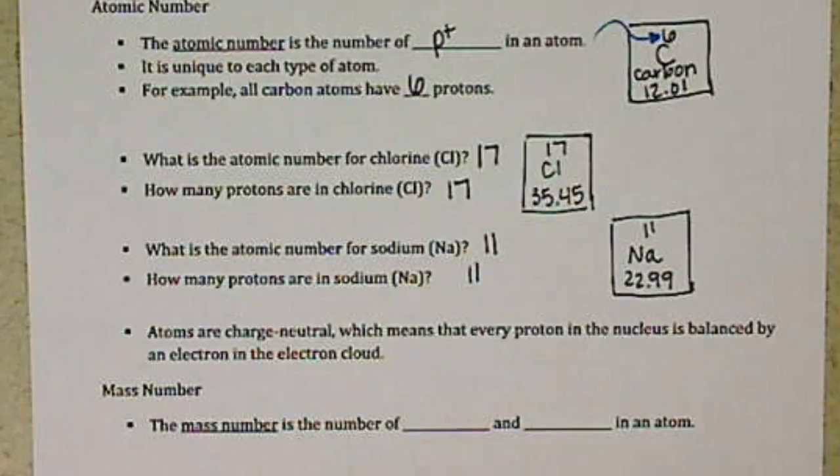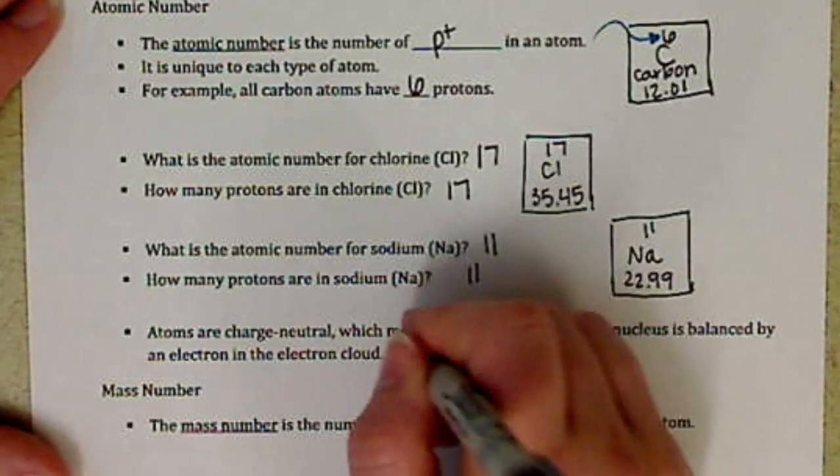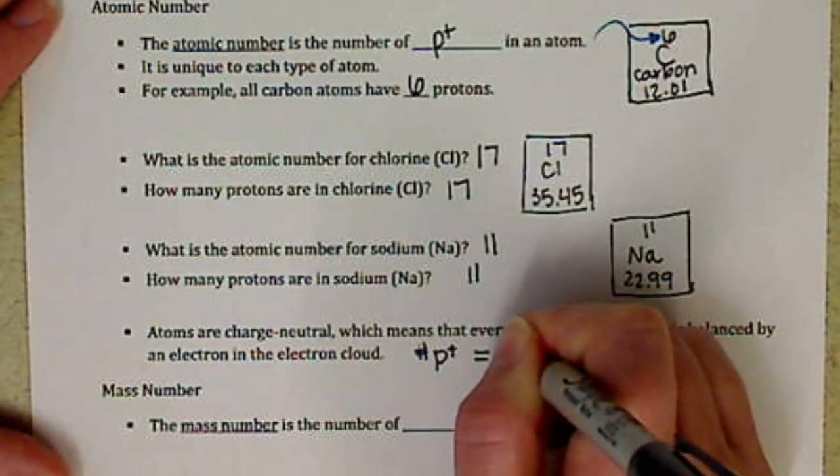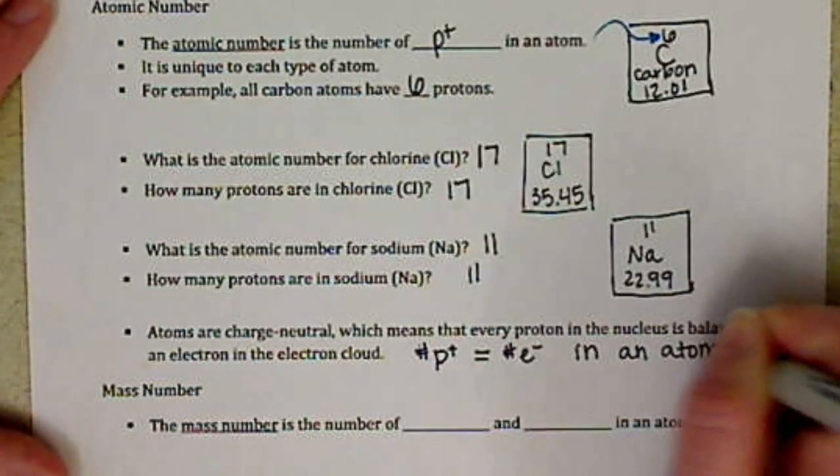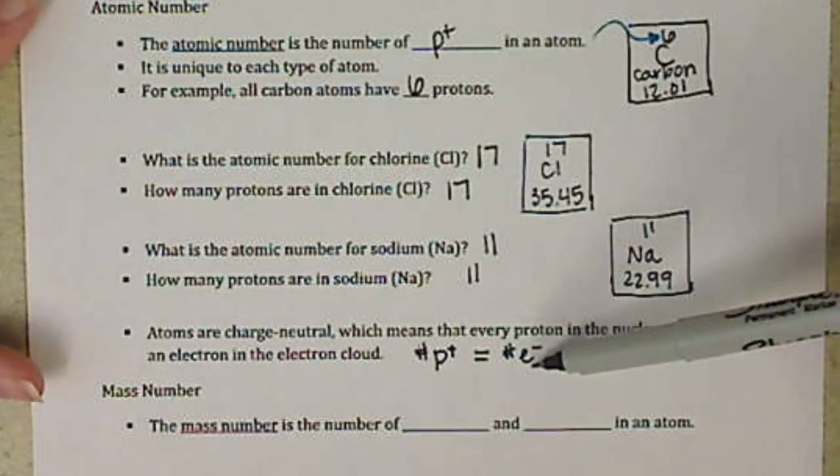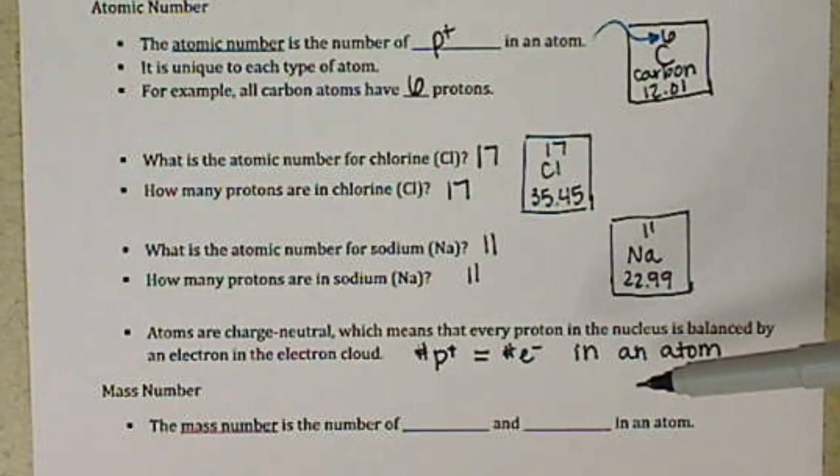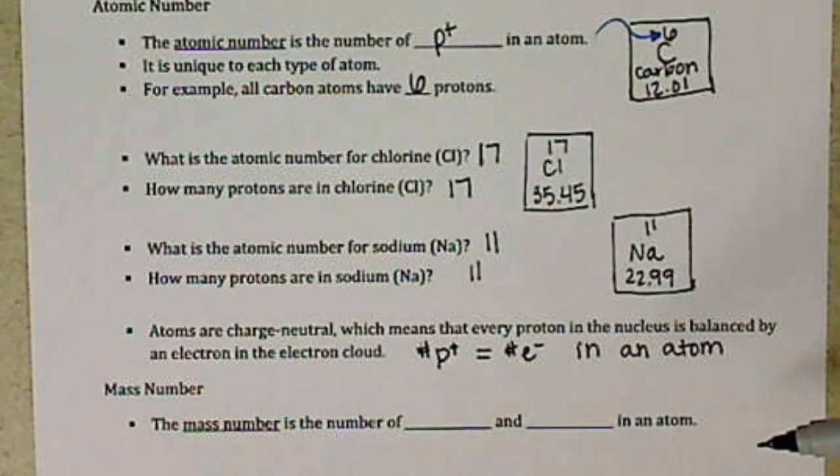Atoms are charge neutral, which basically means that for every positive charge, we have to have a negative charge. So for every proton that we have, we have an electron. So the number of protons is going to equal the number of electrons in an atom.